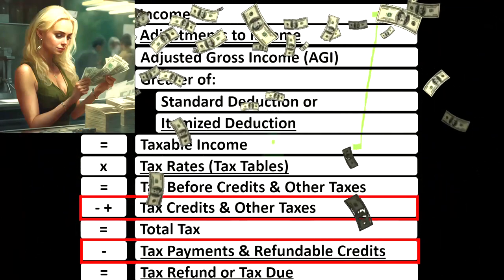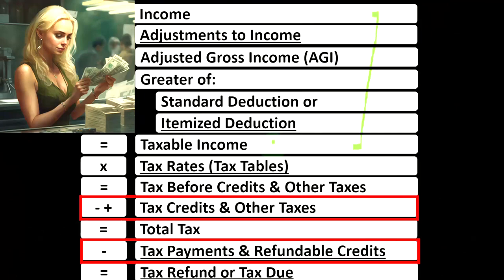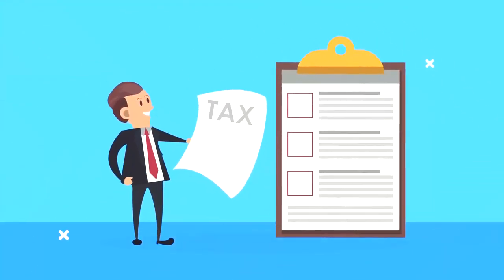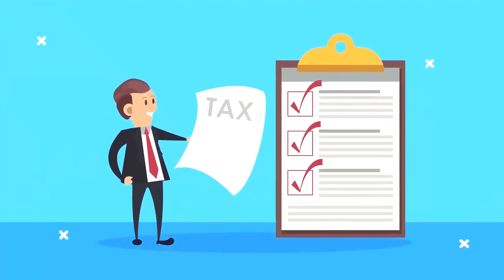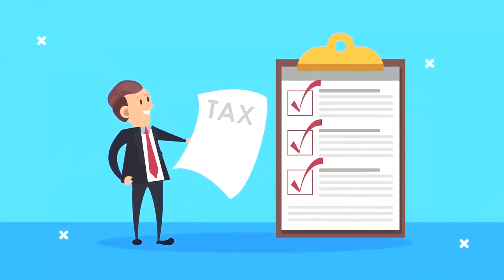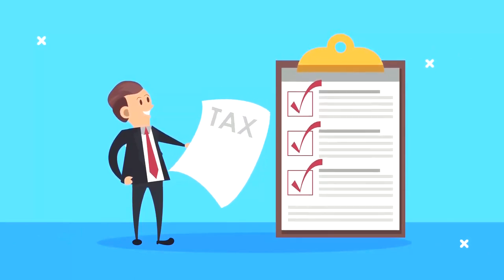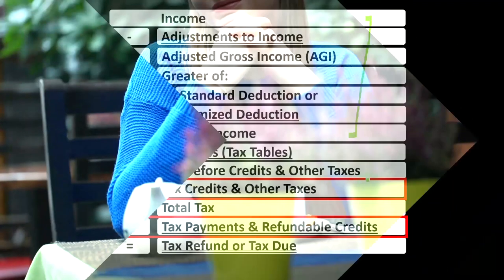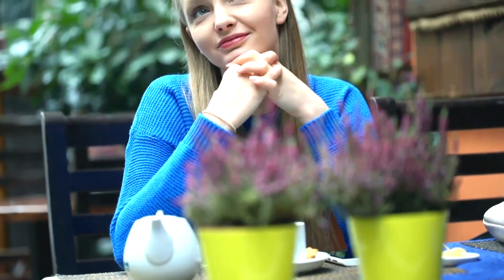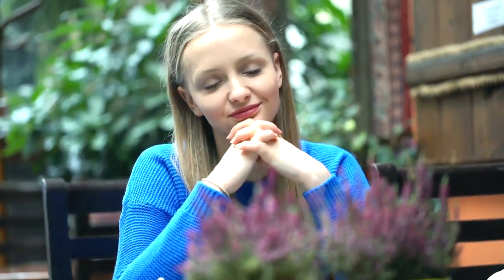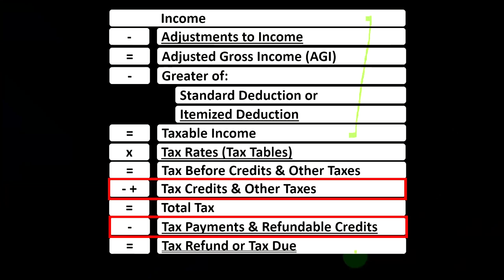Then we calculate the tax on that taxable income — not using one rate, not a flat tax system, but using the progressive tax system to get to the tax before credits and other taxes. Then we have to think about those credits and other taxes like self-employment tax, and how much we paid in with estimated tax payments or withholdings, to get to the bottom line: tax refund or tax due.